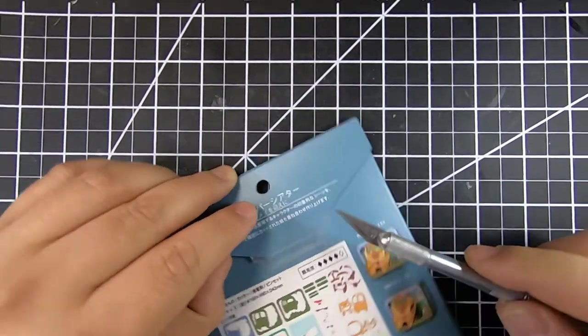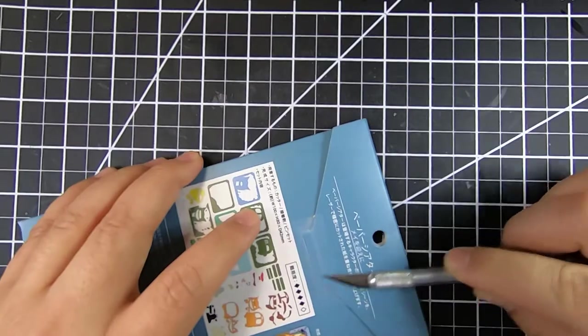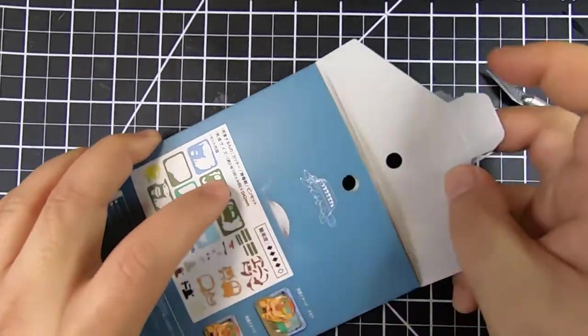So let's open up the package. I'm using an exacto knife to kind of get rid of the tape and once we open it's usually the same for the paper theater.